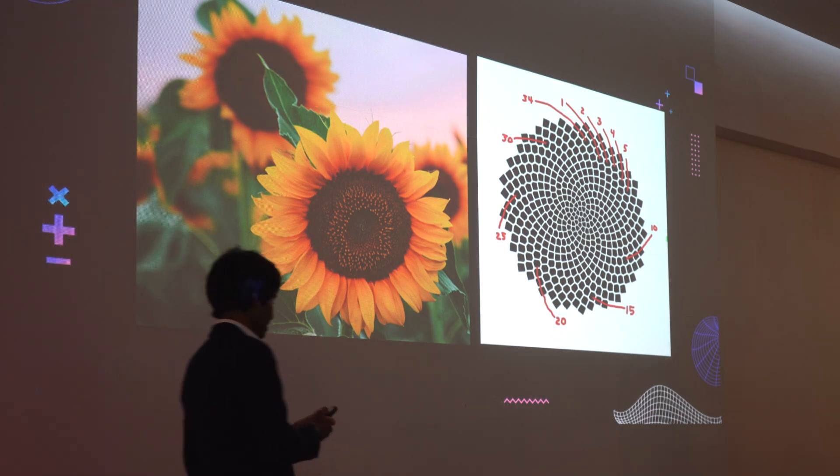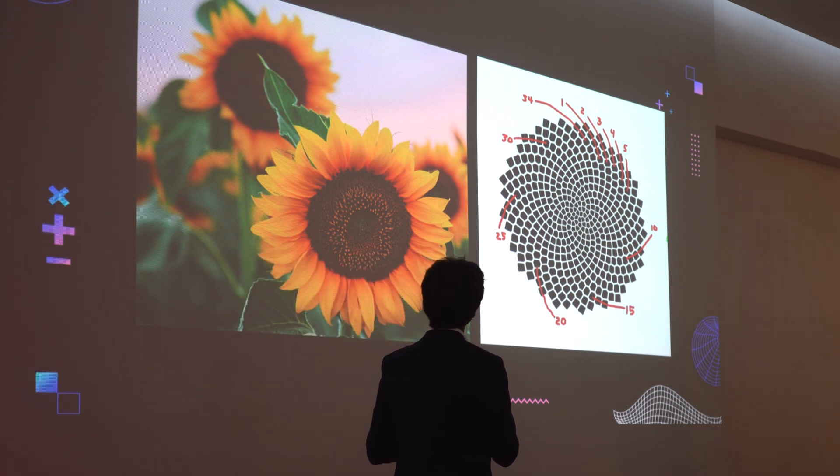What we notice here is that the number of spirals we get is always, or most of the time, a sum of two Fibonacci numbers. For example, 34 in this very unique sunflower.